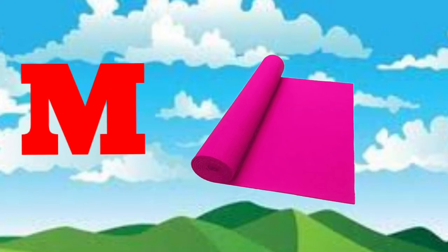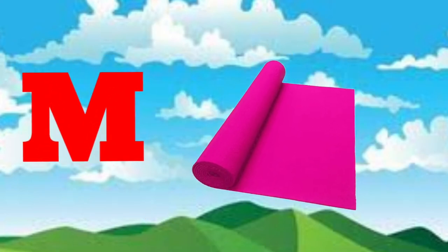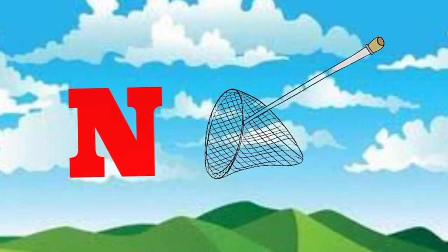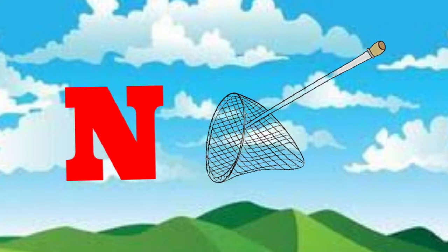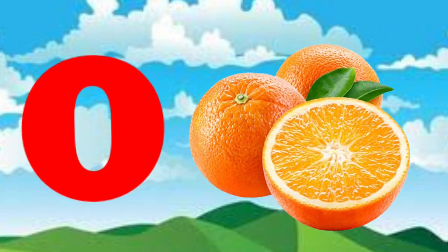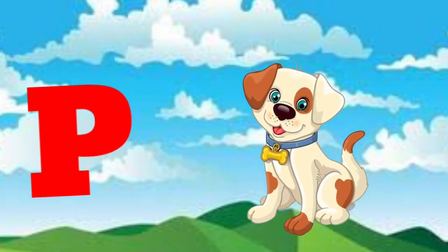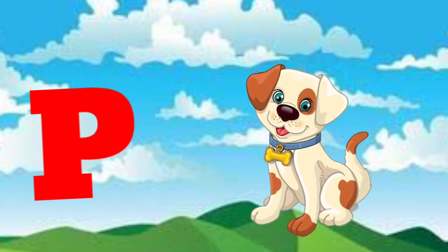M is for mat, m-m-mat. N is for net, n-n-net. O is for orange, o-o-orange. P is for pet, p-p-pet.